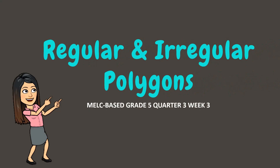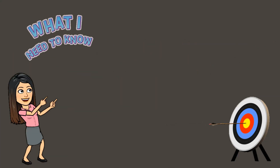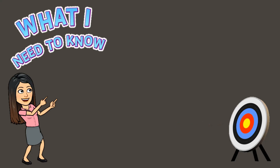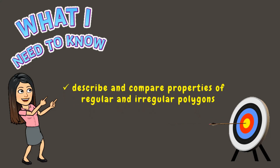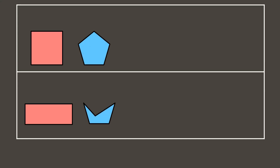Hello there students, welcome back to my classroom. For today's lesson you will learn how to describe and compare properties of irregular and regular polygons. Let's go! Let's take a look at these figures — we have here two quadrilaterals, pentagons, hexagons, heptagons, and octagons.